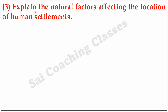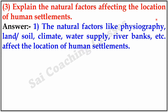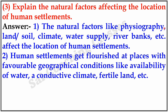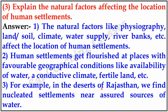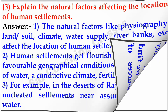Question 3. Explain the natural factors affecting the location of human settlements. Answer: The natural factors like physiography, land or soil, climate, water supply, rivers, river banks, etc. affect the location of human settlements. Human settlements flourish at places with favorable geographical conditions like availability of water, a conducive climate, fertile land, etc. For example, in the desert of Rajasthan, we find nucleated settlements near assured sources of water.